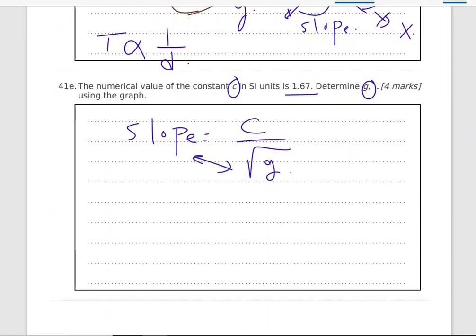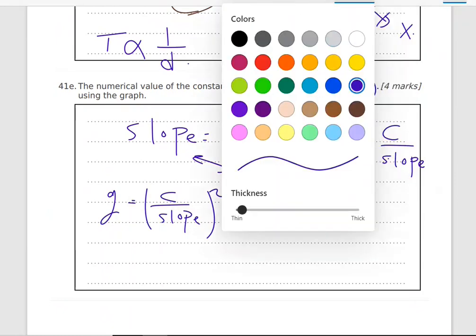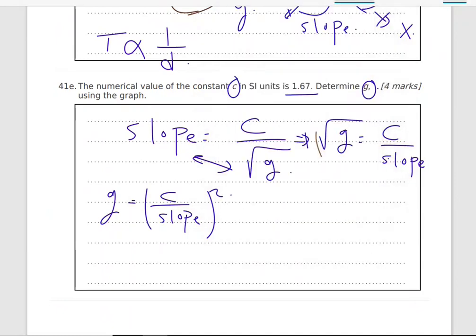Square root of G will equal C divided by the slope. I need G. So I'm going to square both sides. So G will equal C over the slope square. What did I do? I squared both sides to get rid of the square root.